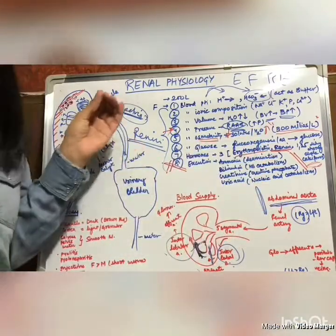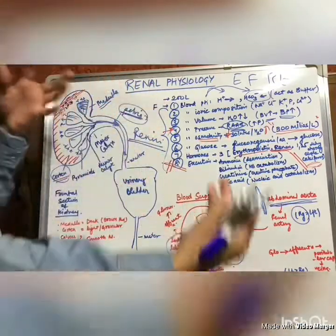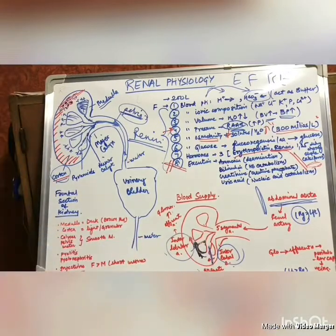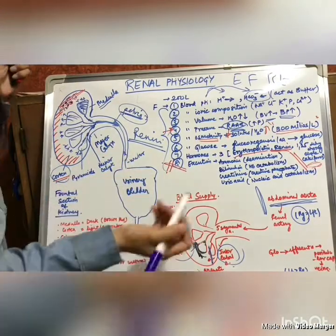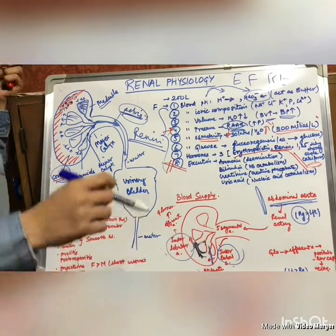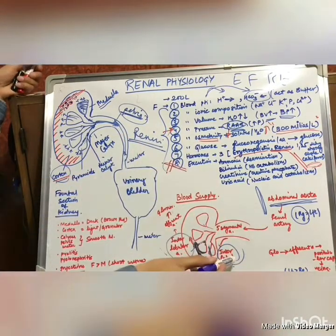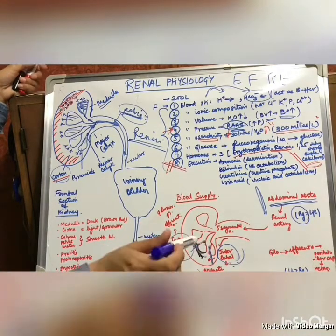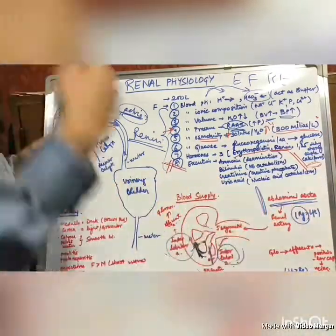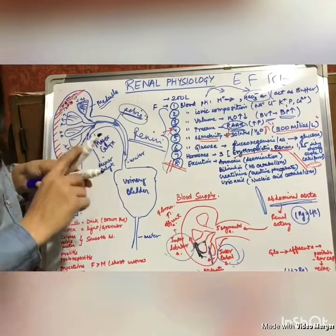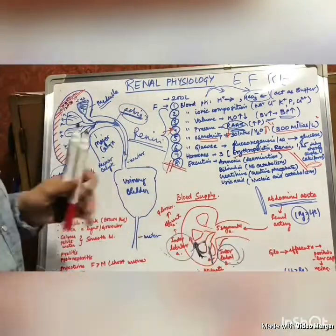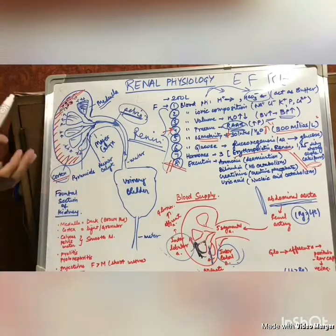From the glomeruli, efferent arterioles are formed, which then form peritubular capillaries. These peritubular capillaries drain into veins. The three main artery names — interlobar, arcuate, and interlobular — correspond to the same-named veins: interlobar vein, arcuate vein, and interlobular vein. Notably, the right renal artery is longer than the left, but the left renal vein is larger than the right renal vein. That concludes the video — thank you.